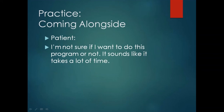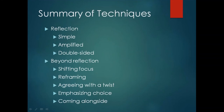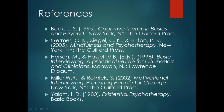That was the last of the five techniques beyond reflection. To summarize: resistance is a natural and expected part of the therapeutic process and a natural part of the process of change. Understanding resistance fosters empathy within us and within the relationship. Responding to resistance effectively leads to an improved therapeutic alliance and techniques focused on validating the client's feelings and facilitating the therapeutic process. The techniques covered are: reflection — simple, amplified, and double-sided — and the five techniques beyond reflection: shifting focus, reframing, agreeing with a twist, emphasizing choice, and coming alongside. Here are references if you're interested in additional information for any of the things we mentioned. Thank you for your time.